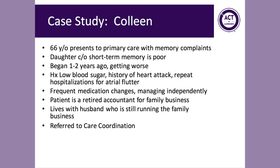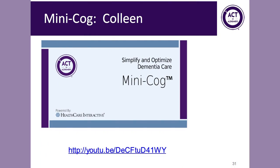Now I'd like to introduce you to Colleen. Colleen is a real person — a delightful lady, 66 years old. She presented to primary care with memory complaints. Her daughter complains that Colleen's short-term memory is very poor, beginning a year or two ago but getting worse. Colleen has a history of low blood sugar, heart attack, and repeat hospitalizations for atrial flutter. She has frequent medication changes, but says she's managing her medications independently. She is a retired accountant for a family business that her husband still runs, and she's been referred to care coordination for her heart disease. I'm going to show you a video of Colleen taking the Mini-Cog screening tool.